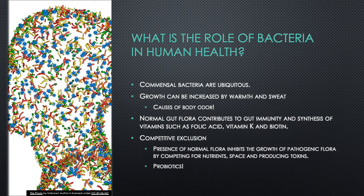The host-microbe relationship is very delicate and we are only scratching the surface of its intricacies. Commensal bacteria is ubiquitous, found in most places, but tends to prefer warm and moist areas such as the groin and armpit — commonly associated with body odor. Another common location is the gut. The bacteria that call your gut home are part of a delicate balance; they help you by producing vitamins such as folic acid, vitamin K, and biotin.